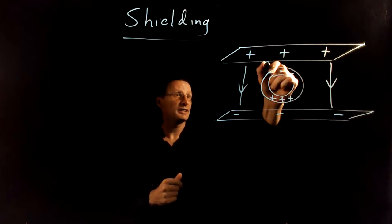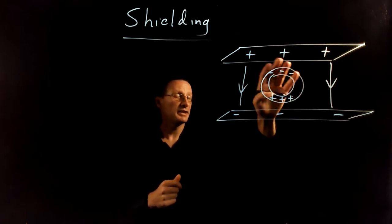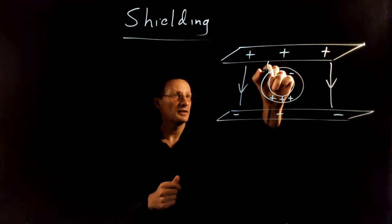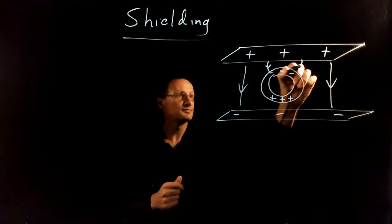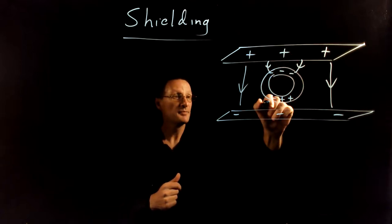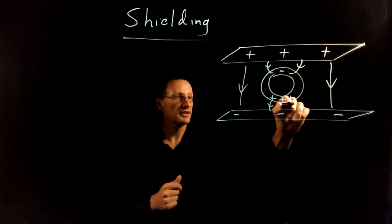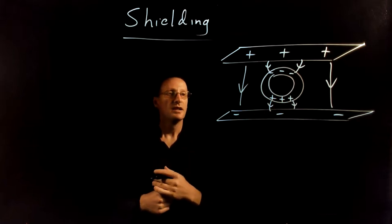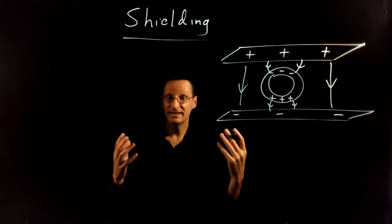So then the electric field outside of the pipe is going to get reshaped to look like this. Those charges are going to, the electric field is going to go from the positive to the negative here. And then it's going to go from the positive to the negative here. Okay, what does the electric field inside look like?